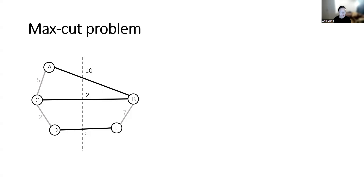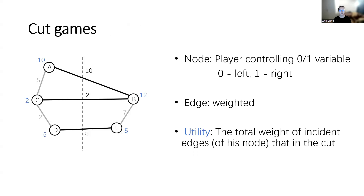Given the max-cut problem, the cut game is a very natural generalization. You are given N players, where N is the number of nodes, and each player controls one node. In max-cut, we find the vector of player variables to decide whether the node goes to the left or right side, and each player is only allowed to decide his own node. Here, we only consider weighted graphs, because the unweighted version is relatively easy and can be solved in polynomial time.